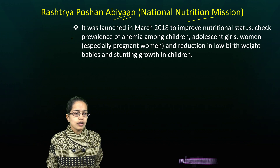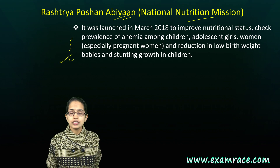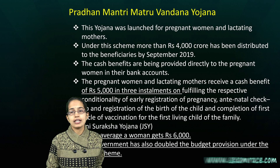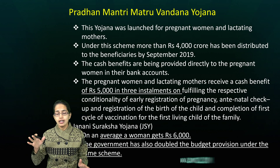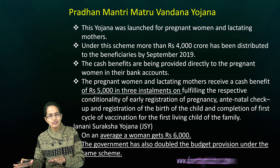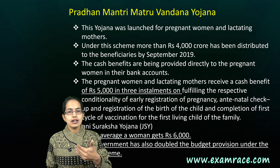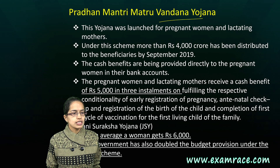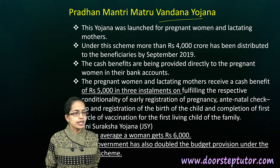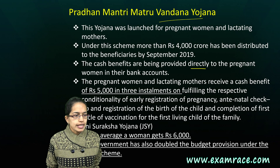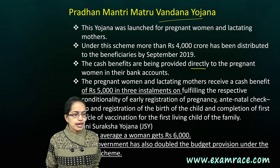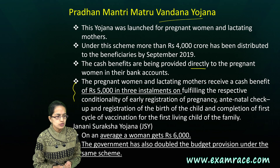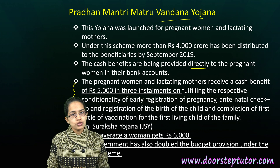The mission focuses mainly on nutritional status, reducing low birth weight, mortality rate, infant and maternal mortality, along with stunting and wasting issues that are part of the Global Hunger Index. The next is Matru Vandana Yojana, mainly for pregnant and lactating women. Direct assistance is provided into bank accounts, with payment done in three installments. Janani Suraksha Yojana provides an average woman a support of nearly 6000 rupees.